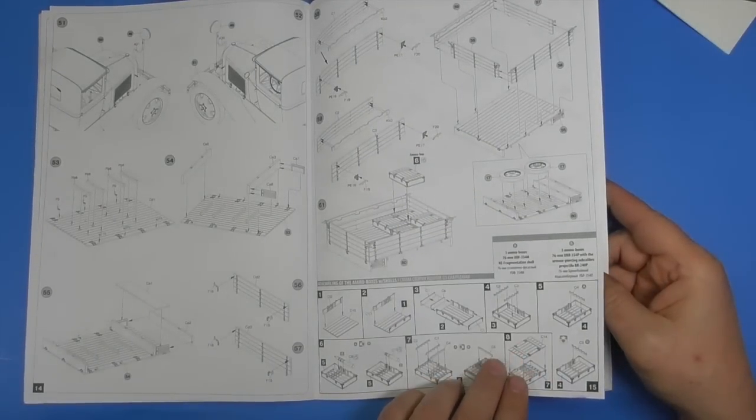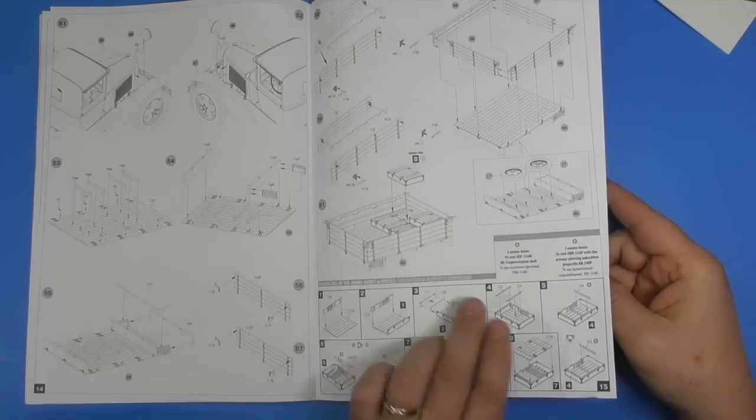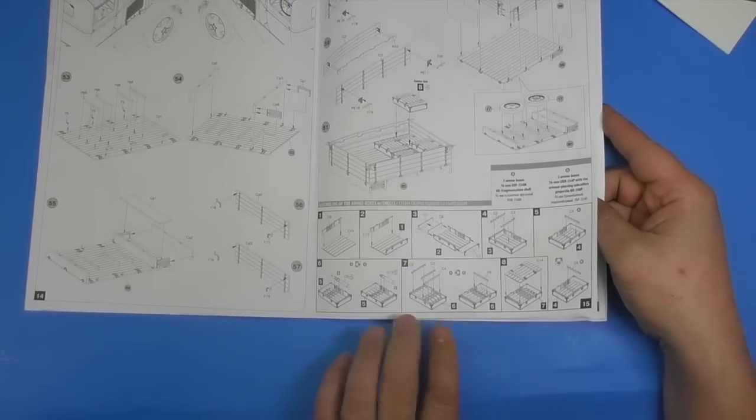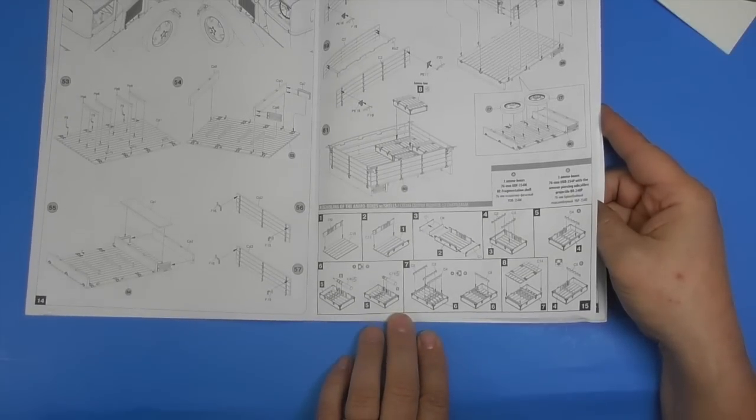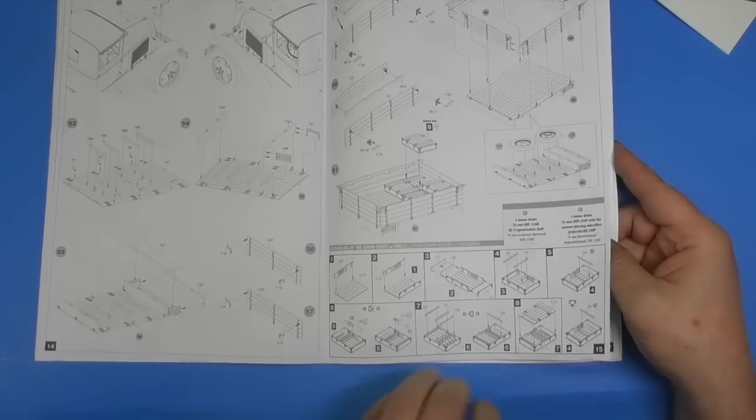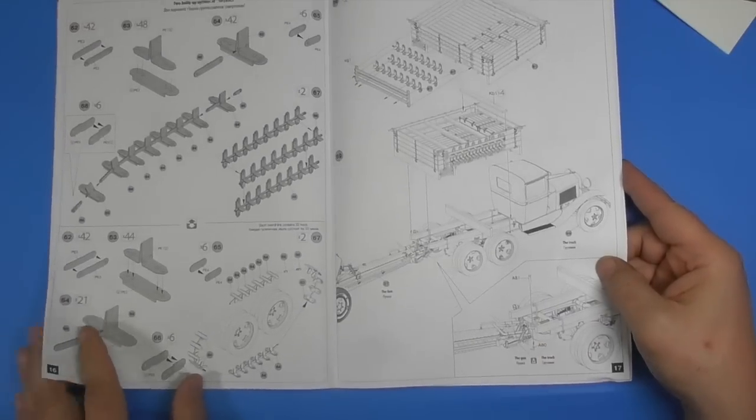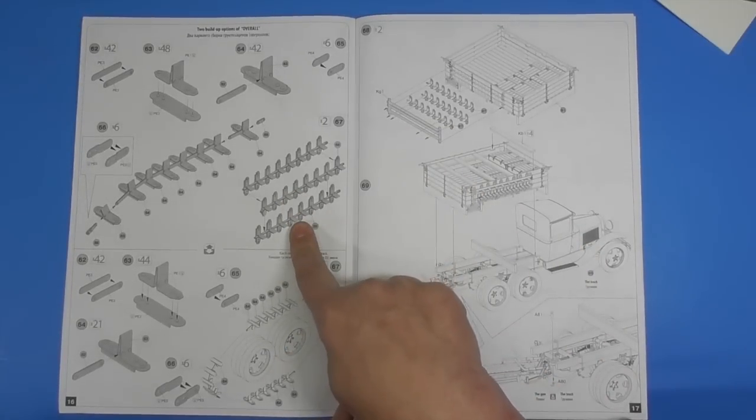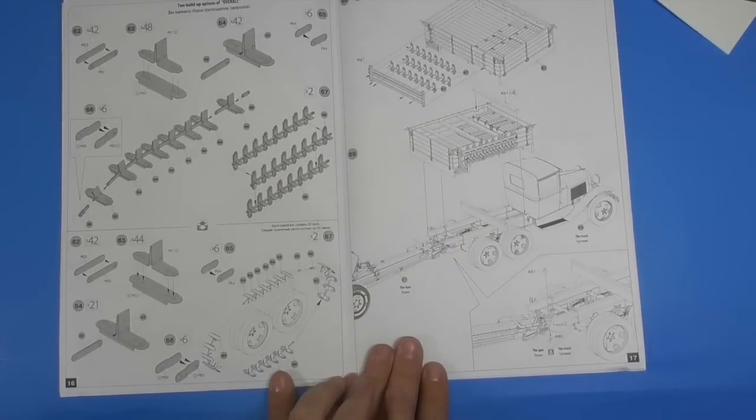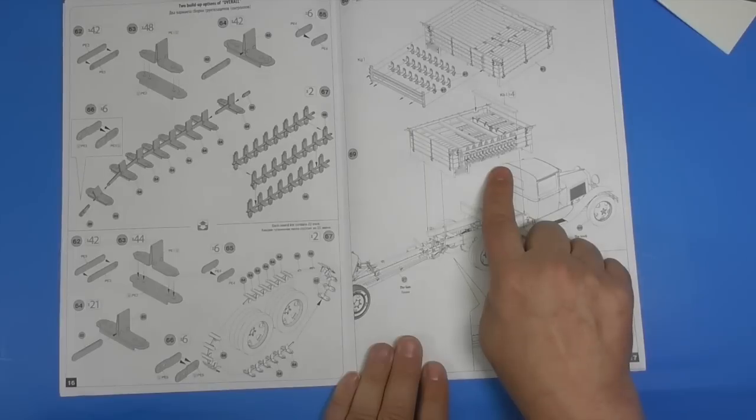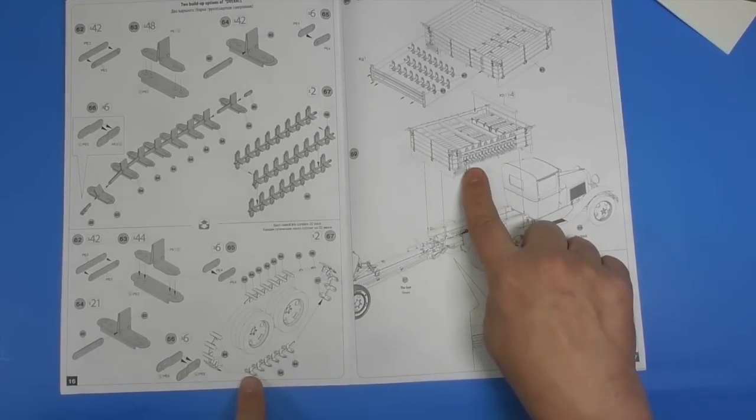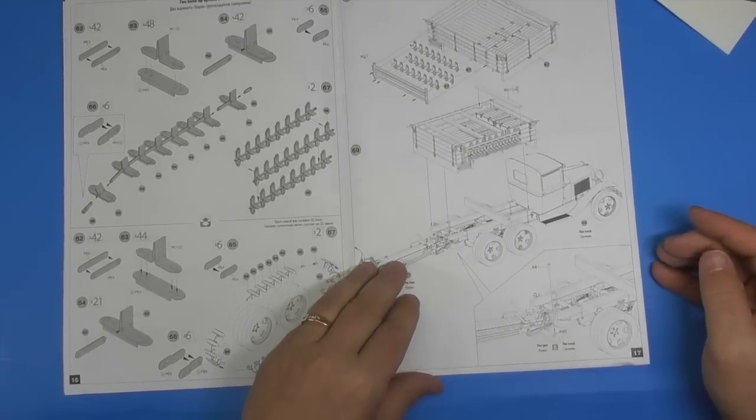Spare tires. There's all your ammo boxes being loaded into the back. Just putting your ammo boxes together. And all that PE that I thought went for the weapons. It doesn't go for the weapons. It folds up and it's like tracks for the wheels. Or on the side. I guess if you do a winter scene you need the tracks on the wheels and if you don't you hang it on the side. Ingenious.